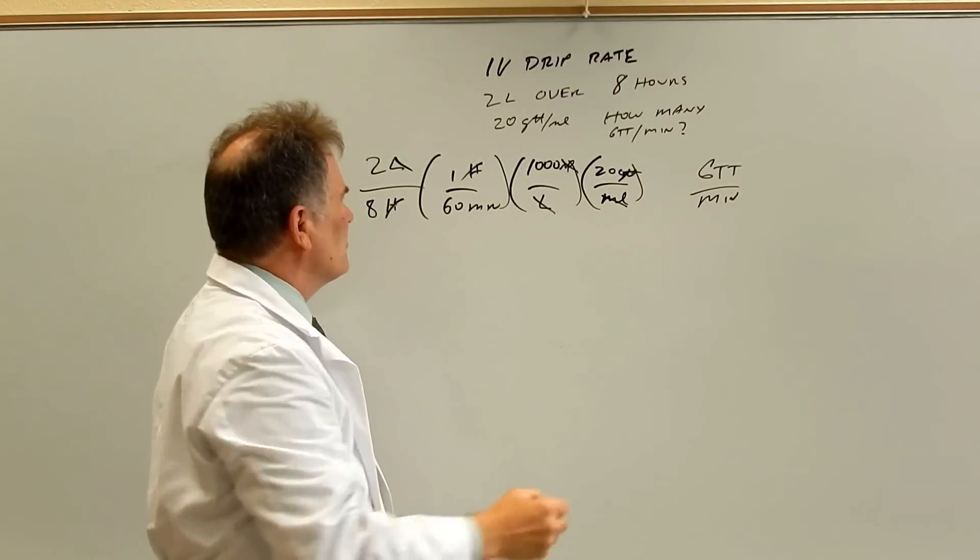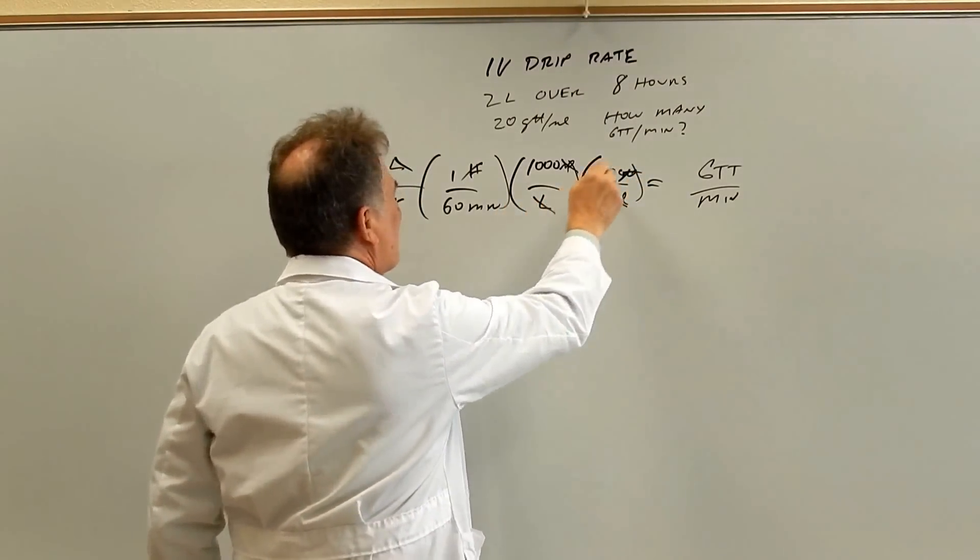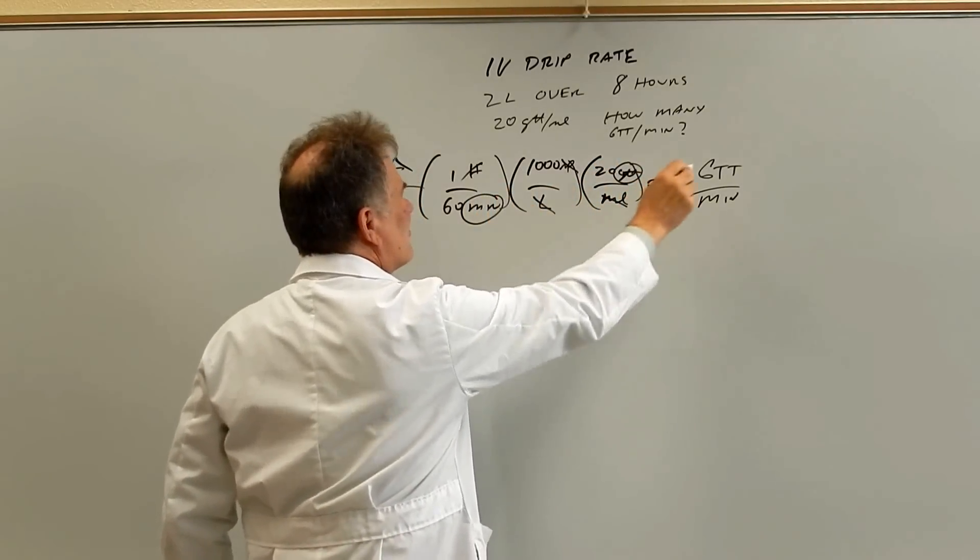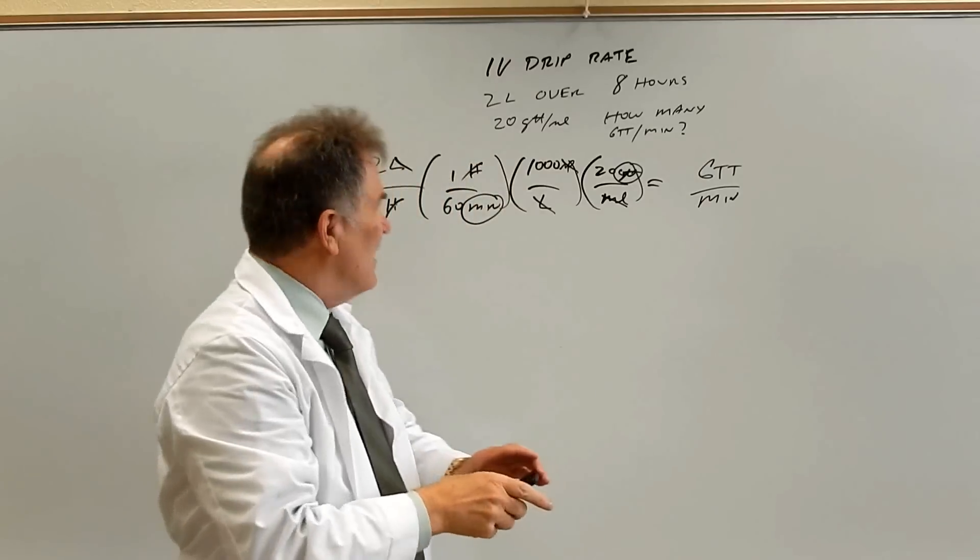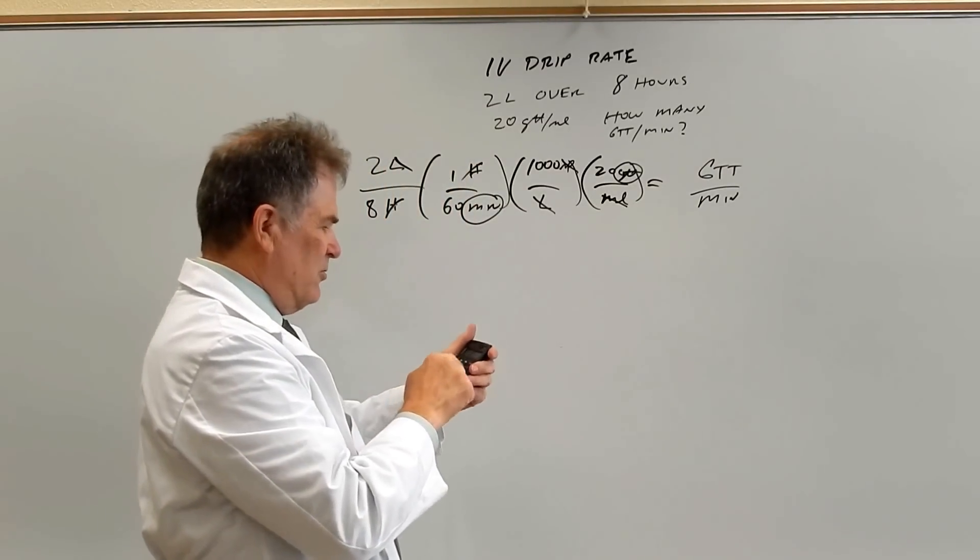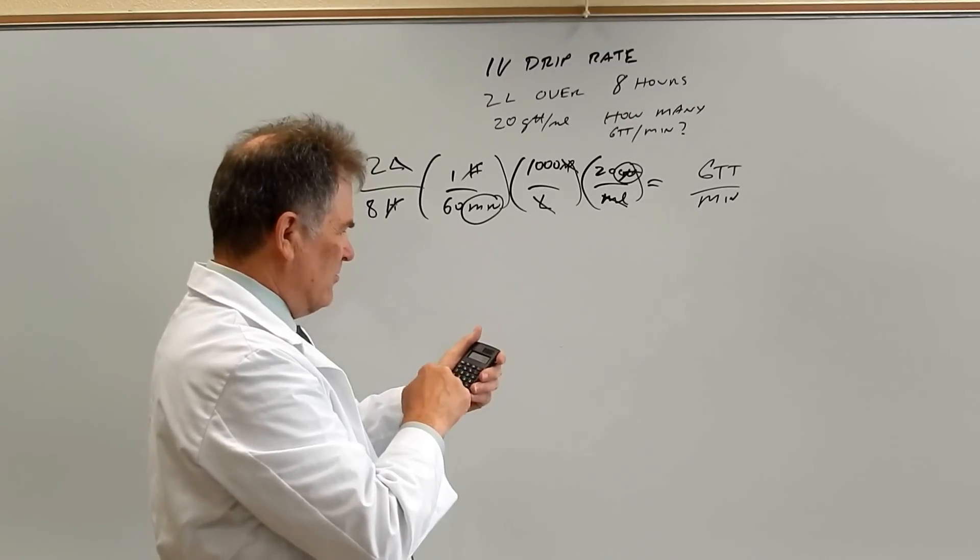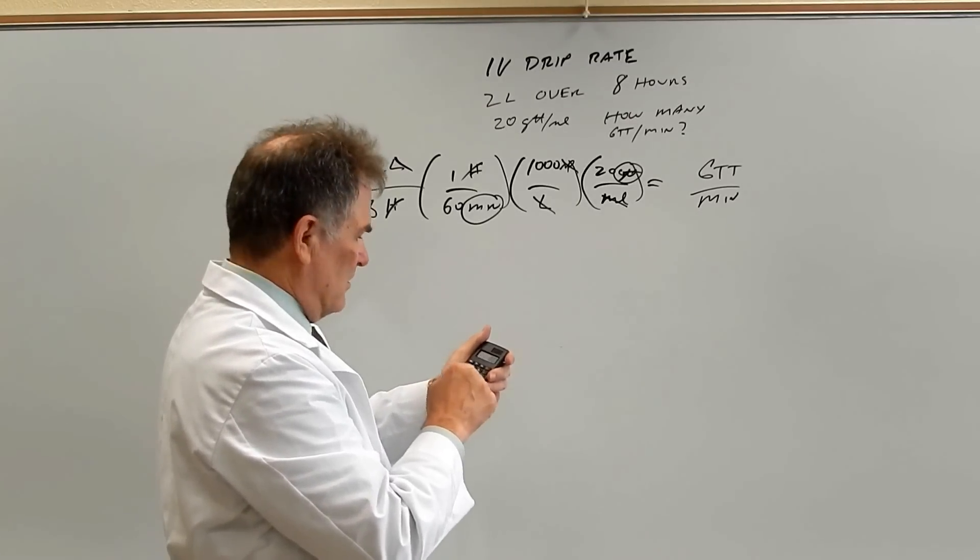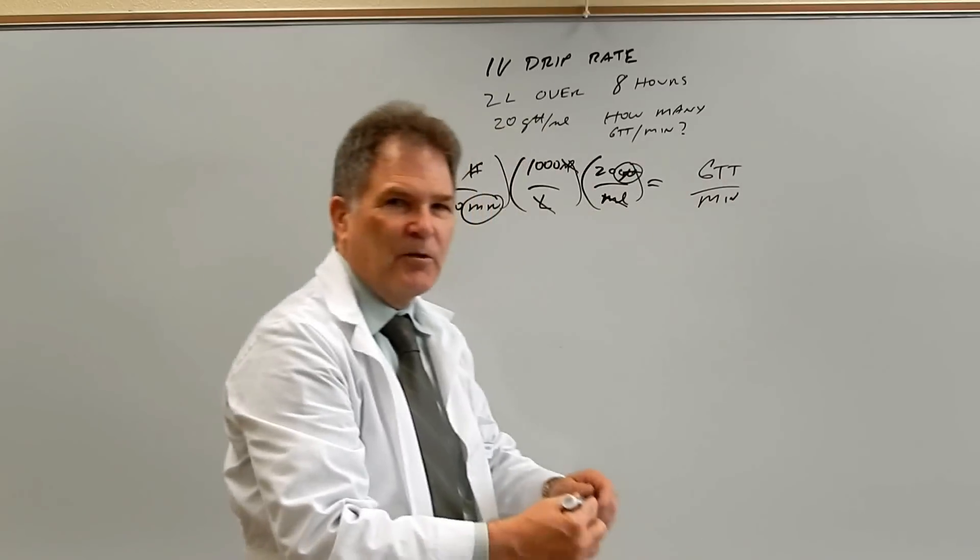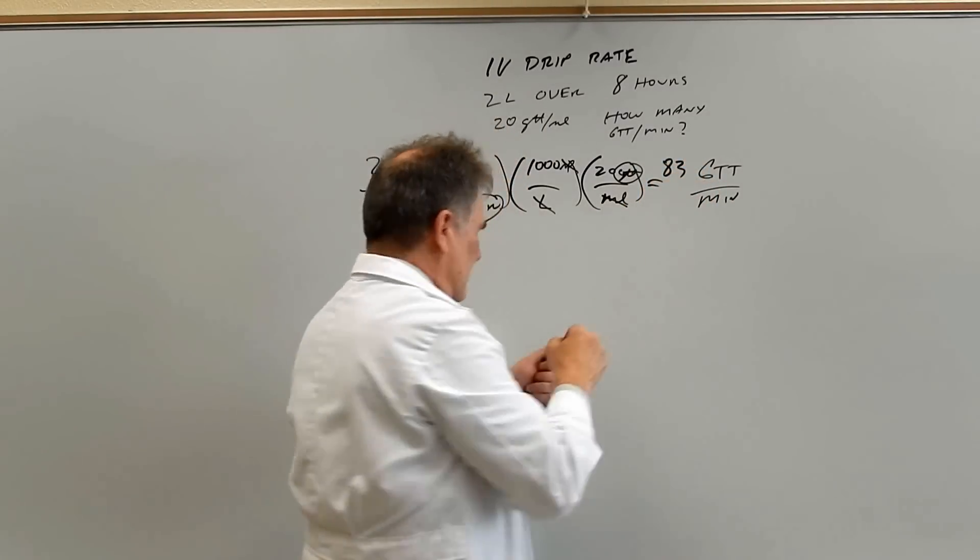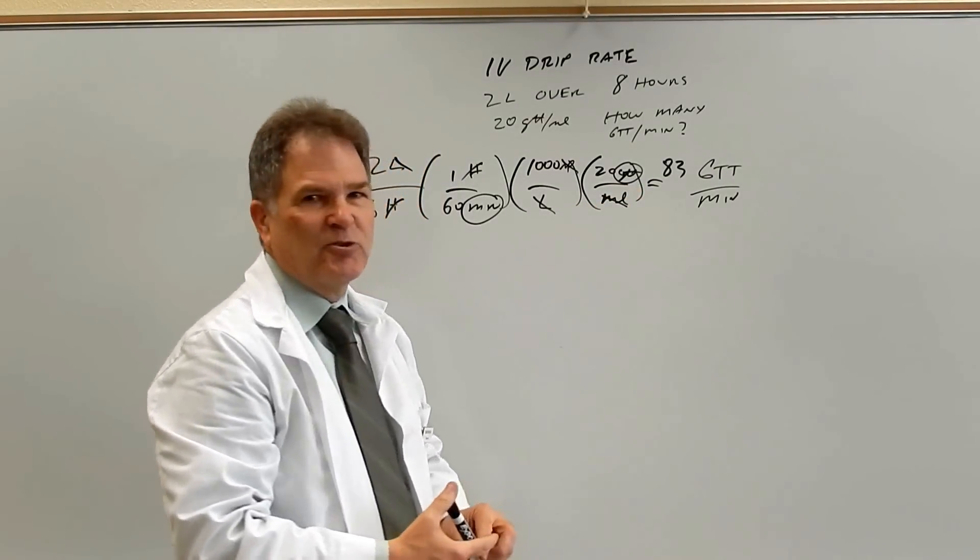Okay, so let's double check everything. Always got to double check. We have drops per minute. Now we can take out the calculator and do the calculations. So we got 2 divided by 8, divided by 60, times 1000, times 20. And that gives us 83.3. But of course, can't have a fraction of a drop. So you round that to the nearest drop. We have 83 drops per minute.